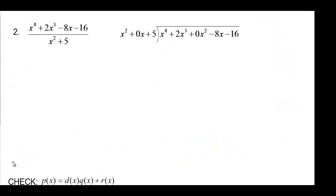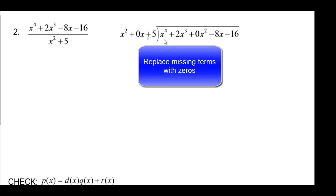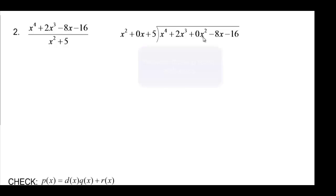So let's try another one. This one you'll notice has some missing terms. And I've placed zeros in for those so that things line up nicely. So we didn't have an X term in our divisor and we didn't have an X squared term in our, it's really called a dividend, the polynomial on top. X to the fourth on top divided by the X squared that we're on the outside. And that gives us X squared.